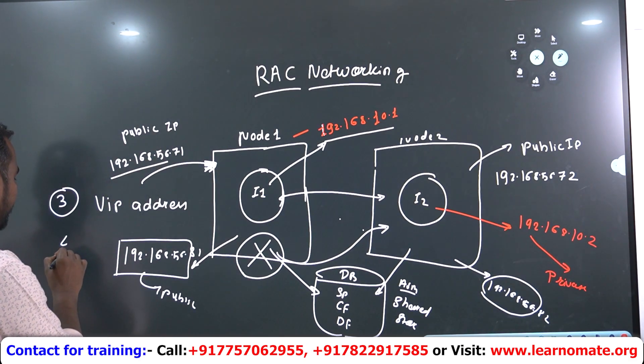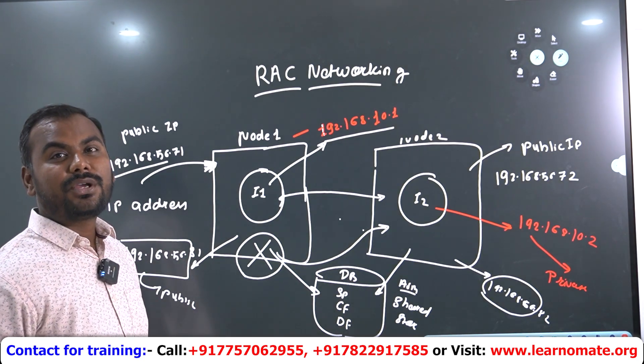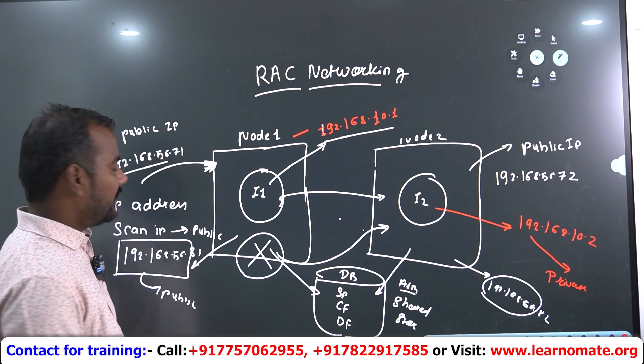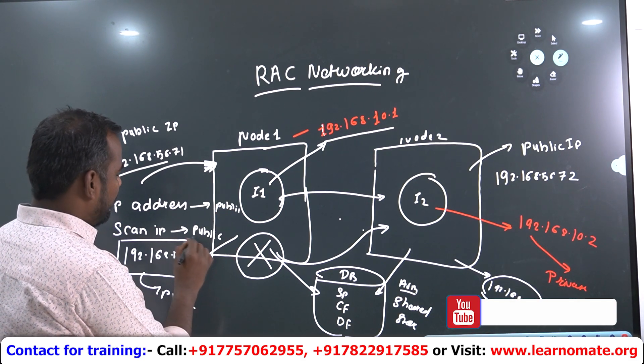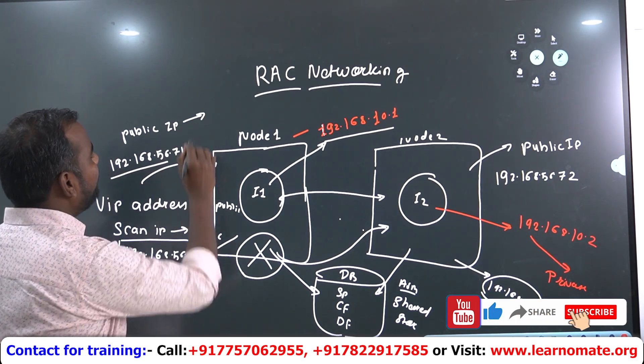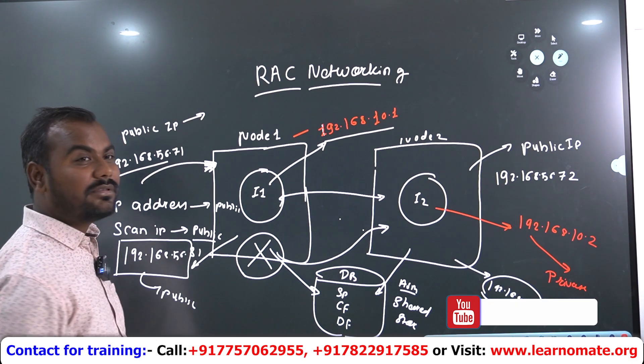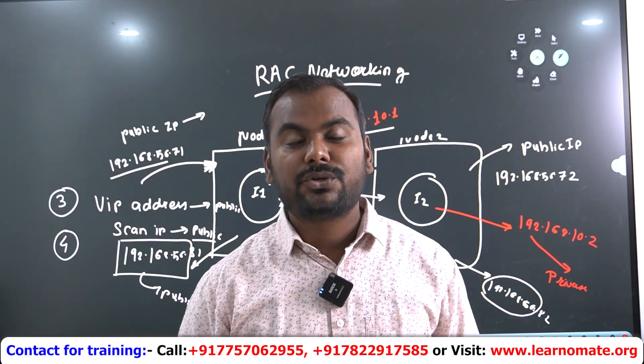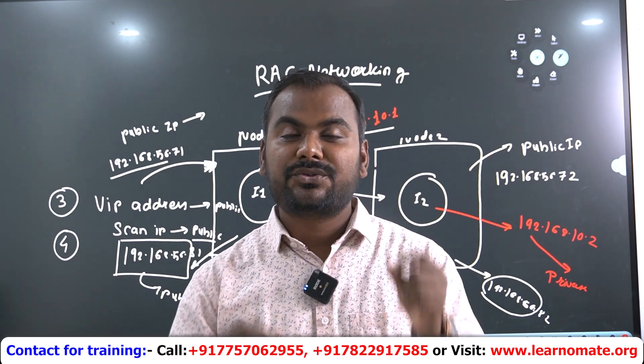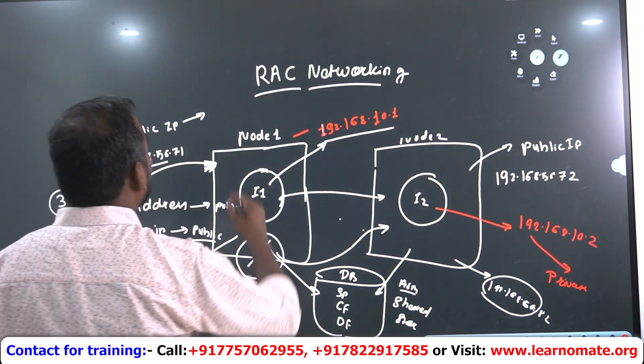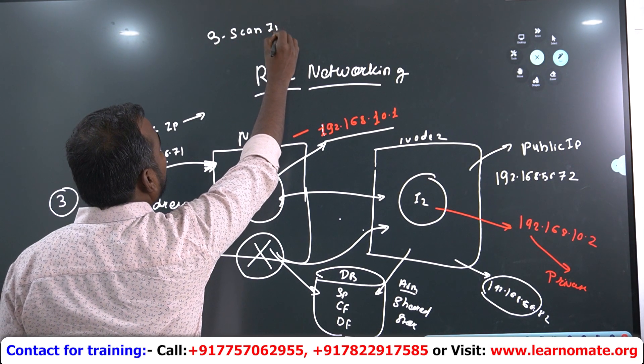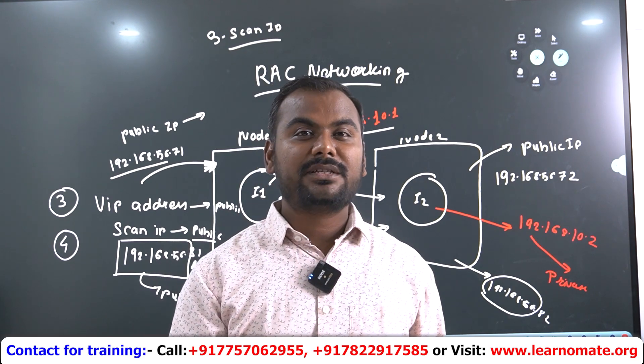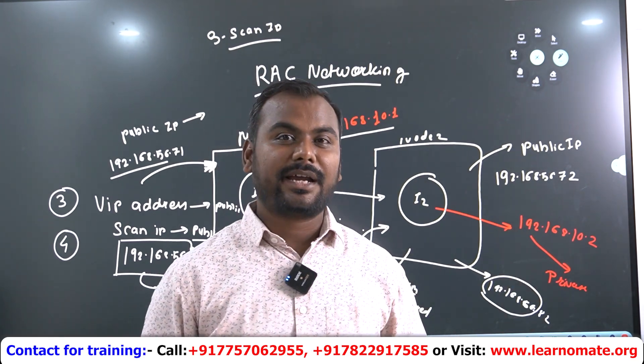The fourth IP address which is very important in networking, we call it as a SCAN IP. SCAN IP also will be in the range of your public IP. VIP address will be also in public. SCAN IPs will be also in public range and your public IP is already there in the public range only. What is the use of SCAN? Now when users are trying to connect from the outside world, when the remote connections are coming to the database, we need that connection will be established with the help of SCAN IPs only. Normally, three SCAN IPs are more than enough to take n number of connections to the Oracle RAC environment.